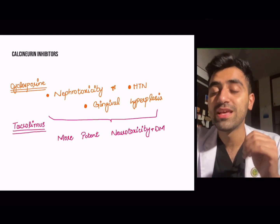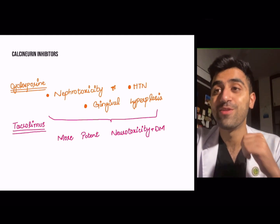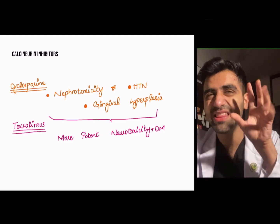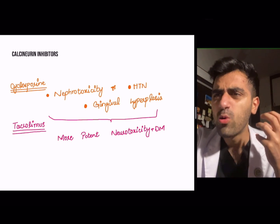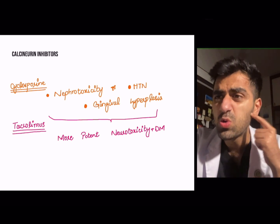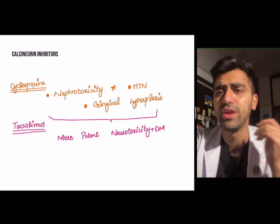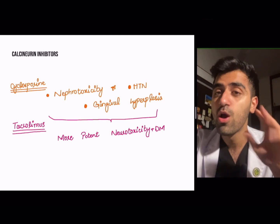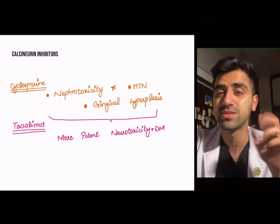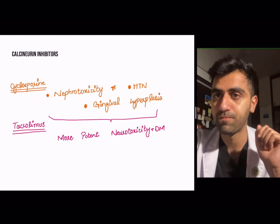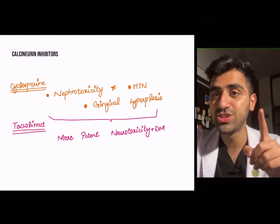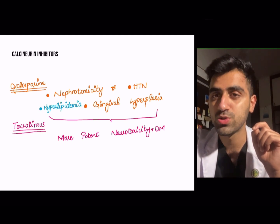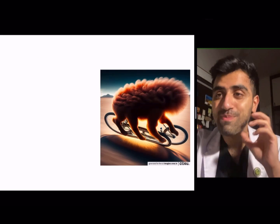Tacrolimus causes more potent neurotoxicity — remember, tacrolimus is a 'brainy' drug because it binds FK506, and it's too hard on the brain, so it causes neurotoxicity. It also causes diabetes mellitus. Both drugs cause some neurotoxicity, but cyclosporine has more potent nephrotoxicity, hypertension, gingival hyperplasia, and hirsutism.